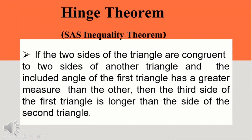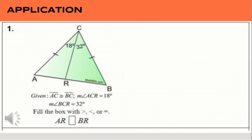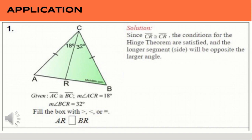The next theorem is the hinge theorem, also known as the side-angle-side inequality theorem. It states that if two sides of a triangle are congruent to two sides of another triangle and the included angle of the first triangle has a greater measure than the other, then the third side of the first triangle is longer than the third side of the second triangle. Example: line segment AC is congruent to line segment BC; the measure of angle ACR is 18 degrees and angle BCR is 32 degrees. Since line segment CR is congruent to itself by the reflexive property, the hinge theorem conditions are satisfied. Therefore, line segment AR is less than line segment BR.